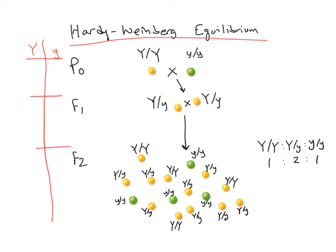So in this case, let's start with the P0 generation. We've got two capital Ys and two lowercase ys in the parents. And then we look at the F1 generation. In the individuals that participated in this population, in this cross, there are still two capital Ys and two lowercase ys.